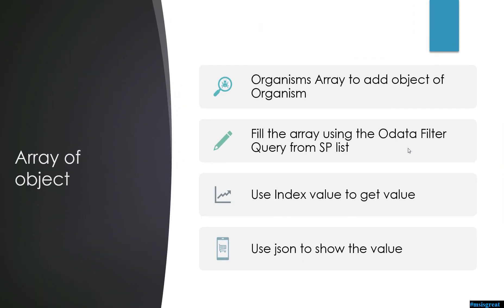This is the current scenario for my demo using Power Automate. In the last Power Automate video I demonstrated how to use a JSON object and fill the JSON object to display or to send an email. In this video I would use the same organism object and show how to add it to an array. The array will be filled using a filter query from the SharePoint organisms list.